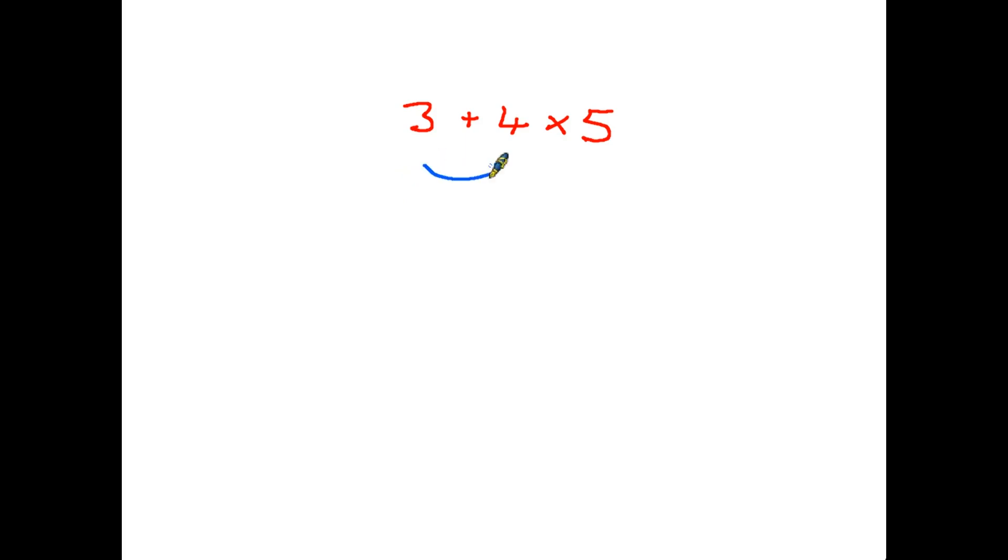So the first thing we might do is 3 + 4, which is 7, and then take that and multiply that by 5. Answer there, 35. And unfortunately, were you to do that you'd get it wrong, because the order of operations is something that tells us what order we have to perform a particular sum in.